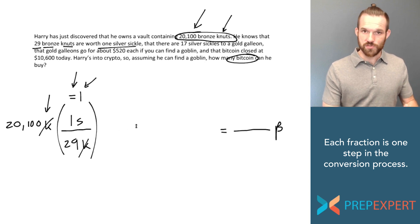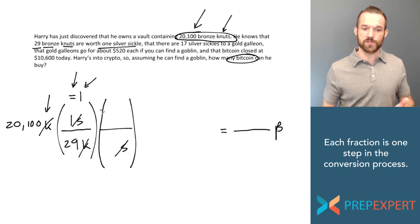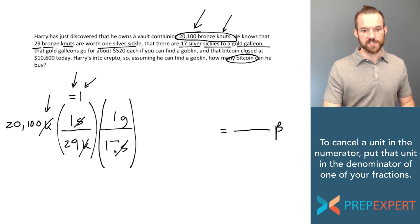Just multiply by another fraction that's equal to one. In this case I'm trying to get rid of sickles. So I'll put sickles in the denominator. Now sickles cancel. Now what can I convert to from sickles? I can convert to galleons from sickles. So I'll put galleons in the numerator. I know that there are 17 silver sickles to a gold galleon. So one gold galleon is worth 17 silver sickles. Now that fraction is equal to one as well.